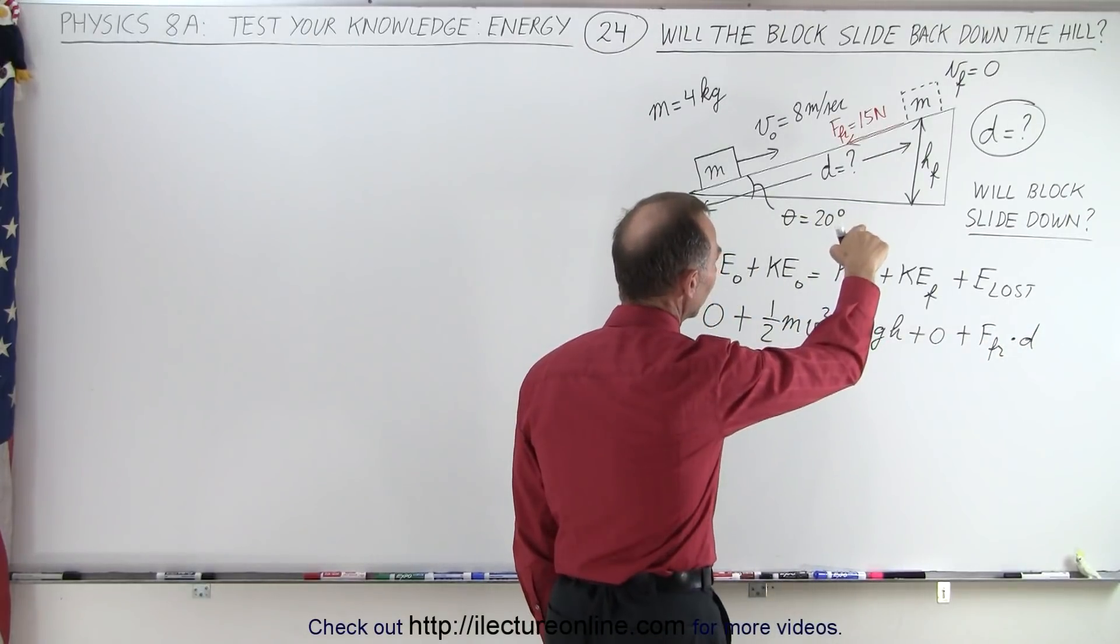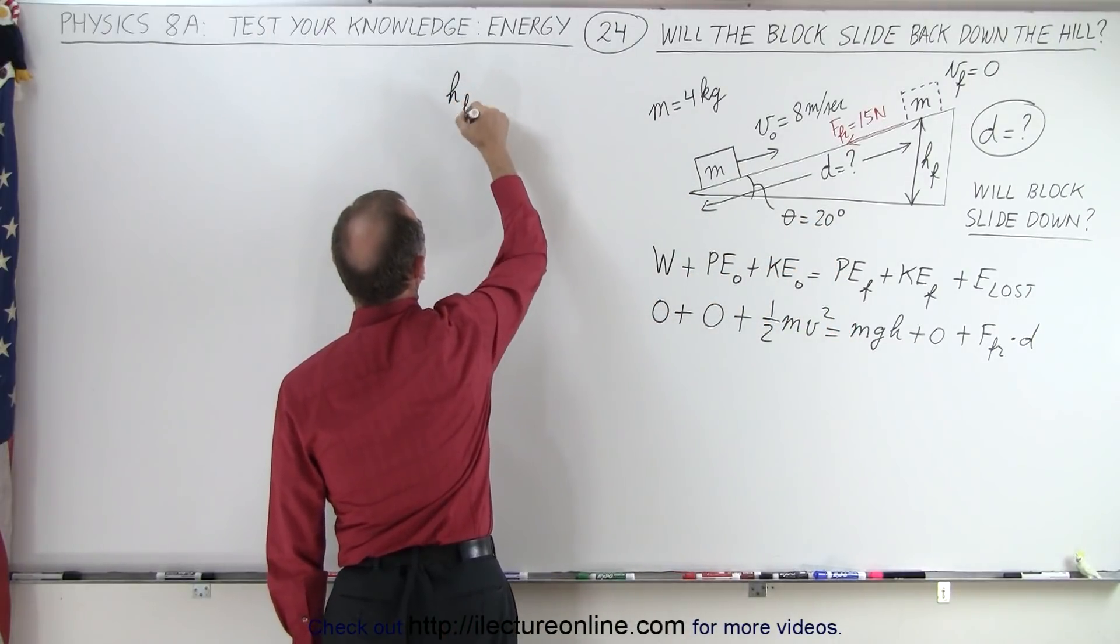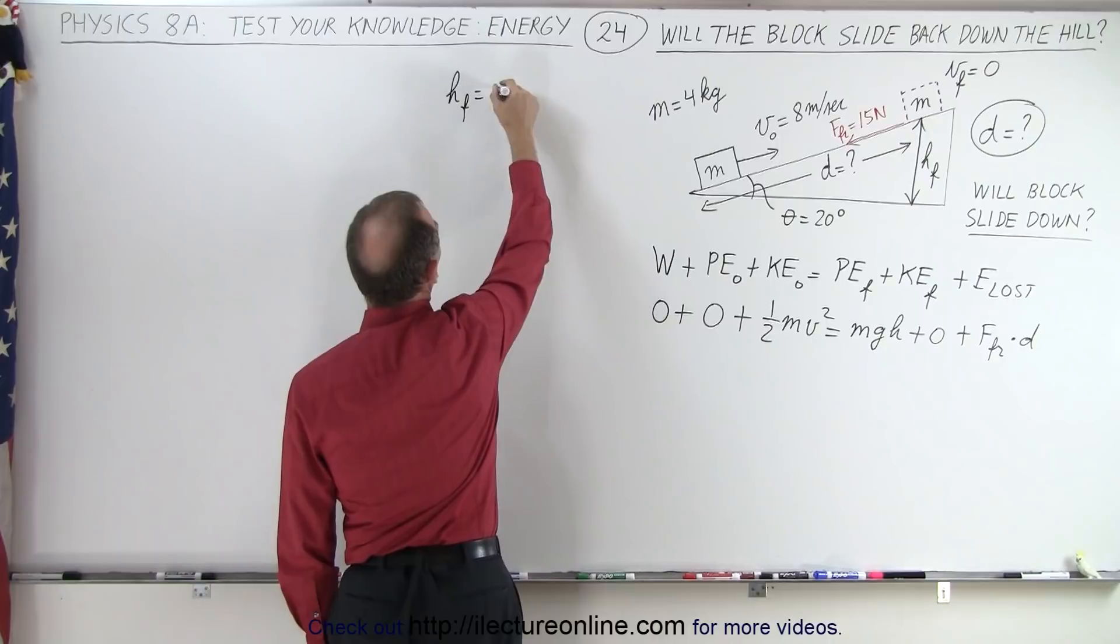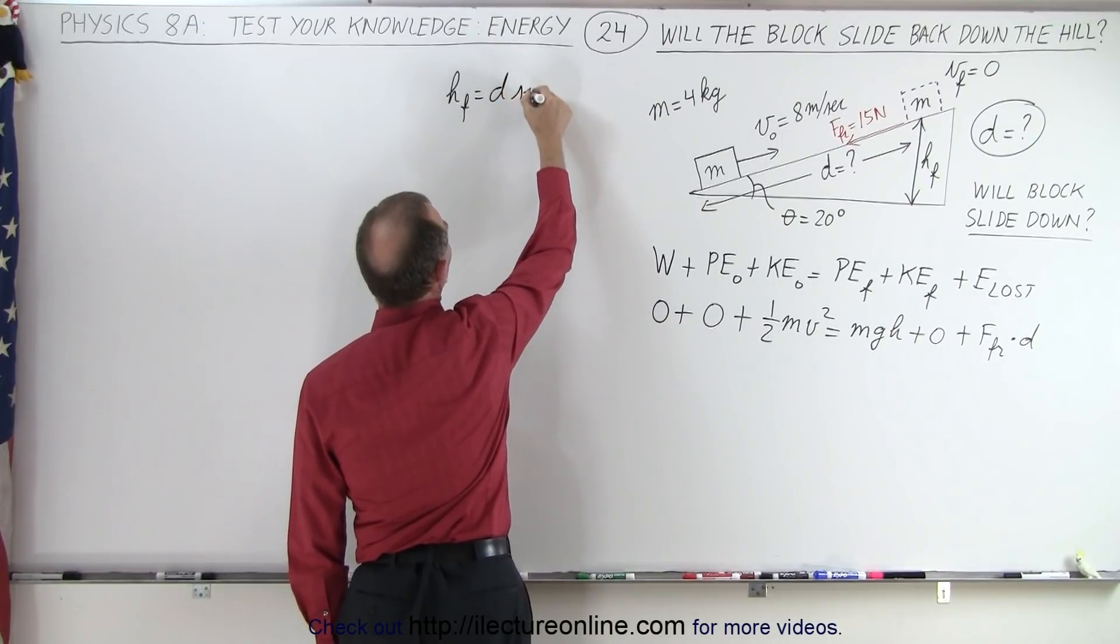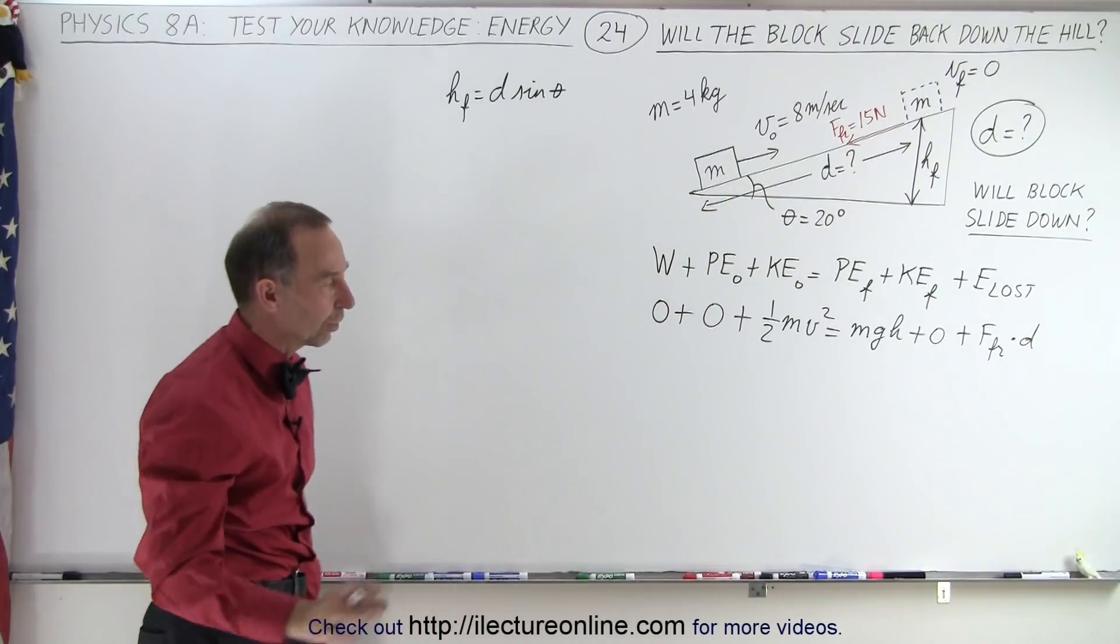Now the height can be written in terms of the distance. We can say that the height final will be equal to the hypotenuse, which is the distance times the sine of the angle theta, because it's the opposite side to the triangle. So let's go ahead and plug that in.